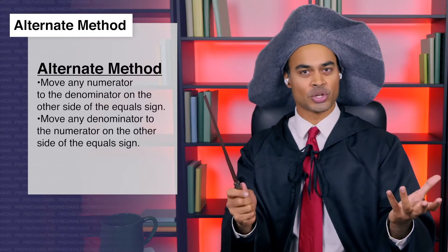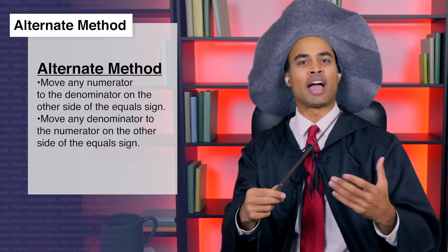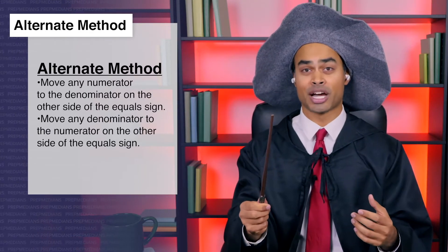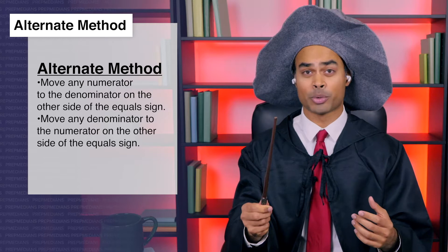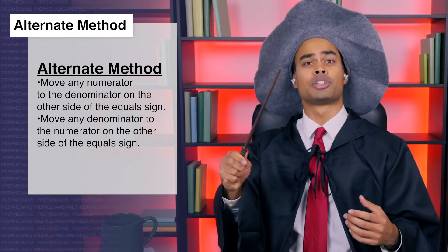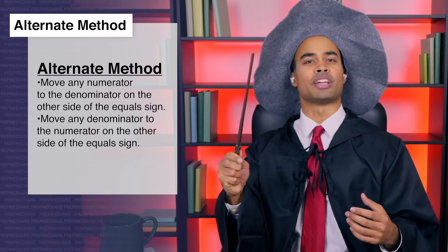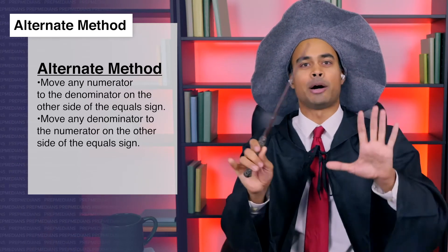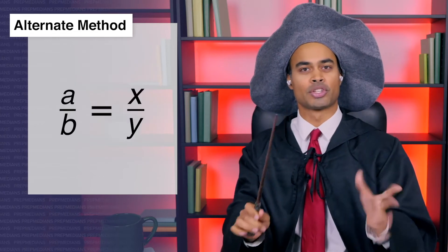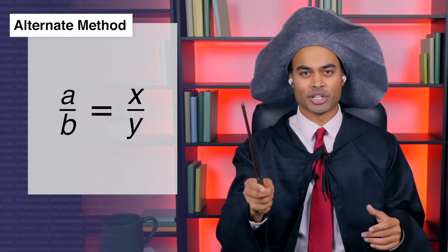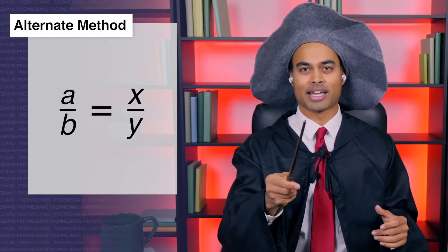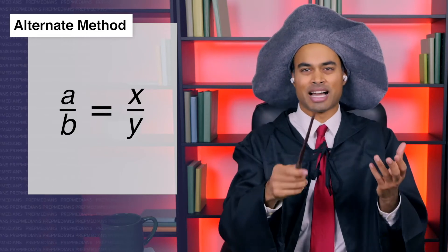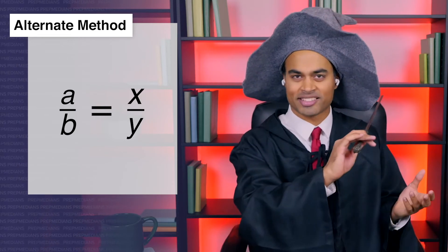When we have a proportion, we can move any numerator to the denominator on the other side of the equal sign, and any denominator to the numerator on the other side of the equal sign, without changing the equation. So, if we want to solve for y, we simply move each piece one at a time like chess.